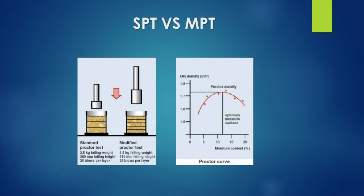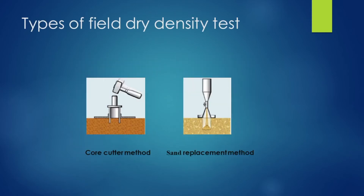Now we have a laboratory process. How do we achieve the maximum dry density in the field? That is the field dry density. How do we find that out? We have to determine the maximum dry density value.